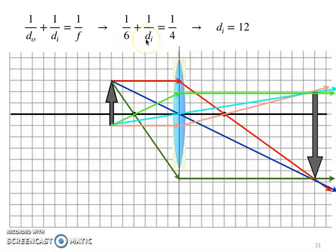Our image distance, we are going to try to calculate. And our focal length, it's positive because this is a convex lens. And it has a value of 1, 2, 3, 4.